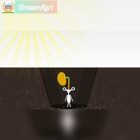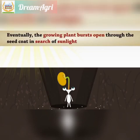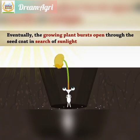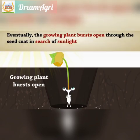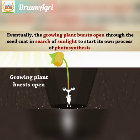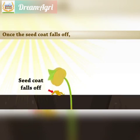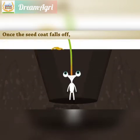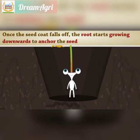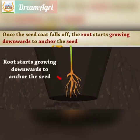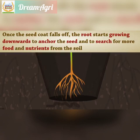It's time for photosynthesis. Eventually, the growing plant bursts open through the seed coat in search of sunlight, to start its own process of photosynthesis. Once the seed coat falls off, the root starts growing downwards to anchor the seed.